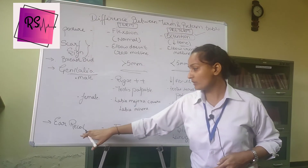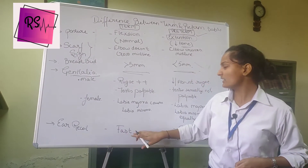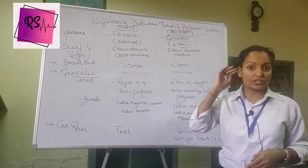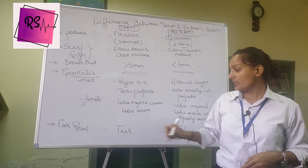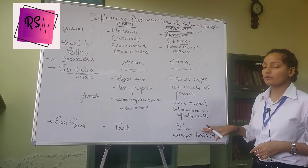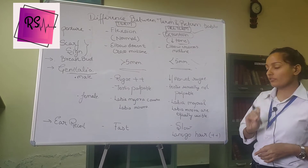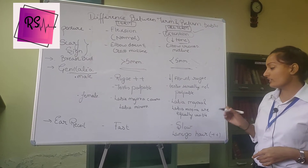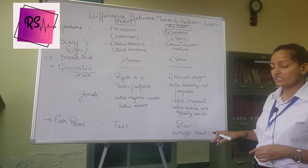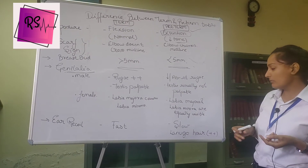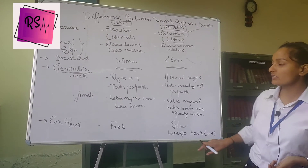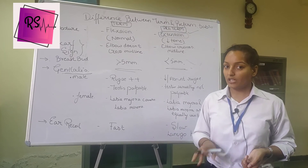The fifth sign is ear recoil — it is fast in term babies and slow in preterm babies. If we fold the ear of a term child, it moves back to its position at a very fast rate. But if the child is preterm, the ear goes back very slowly. Also, lanugo hair — the hair on the body of the baby — will be present in a very high amount in a preterm baby, whereas in a term baby, lanugo hair is very less or absent.